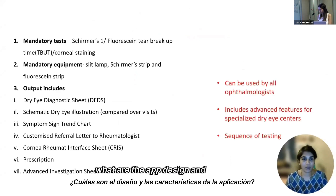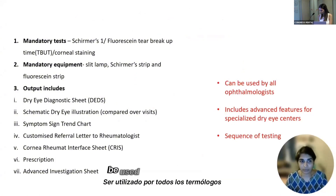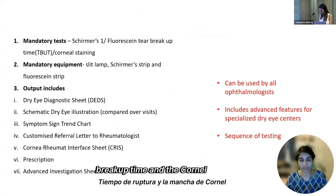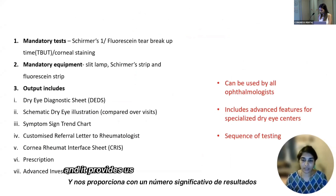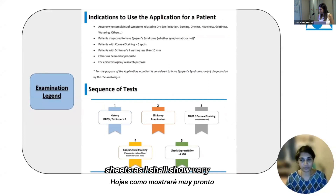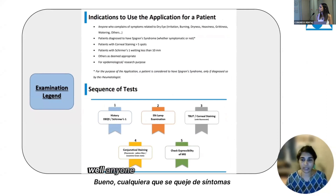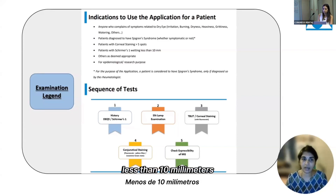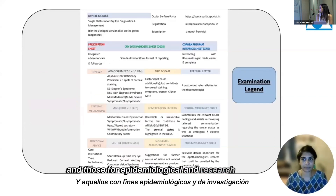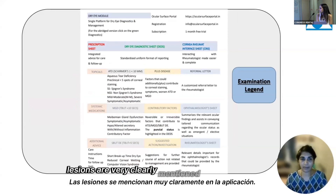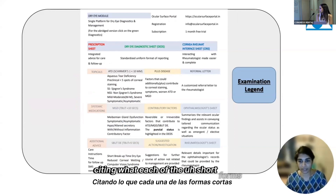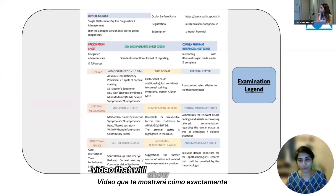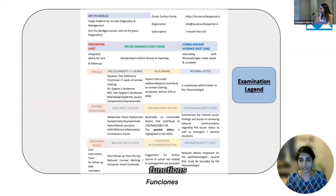The biggest highlight of the app design is that it can be used by all ophthalmologists. The only mandatory tests it warrants are the Schirmer's one wetting, the fluorescein tear breakup time, and the corneal staining — all accessible to every ophthalmologist. Indications to use the application include anyone with dry eye symptoms, those diagnosed with Sjögren's syndrome, those with corneal staining, a Schirmer's wetting less than 10mm, and those for epidemiological and research purposes. Examination notations are clearly defined in the application, citing what each short form means and how it was derived.